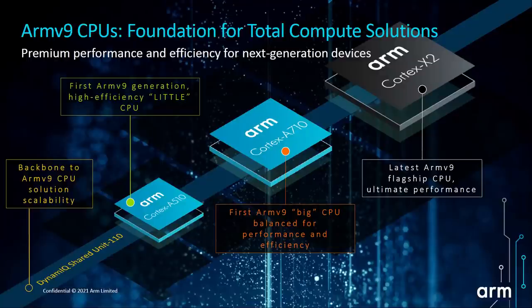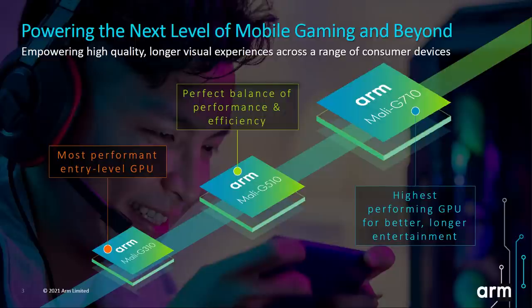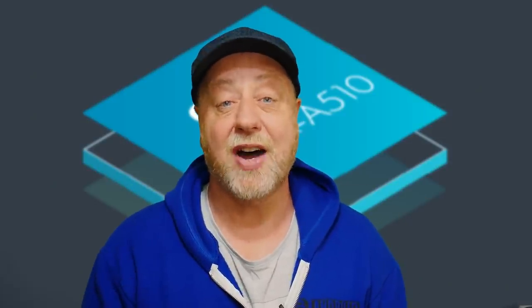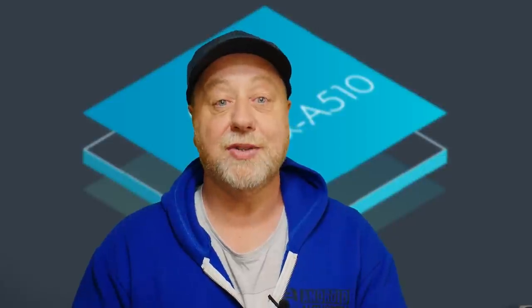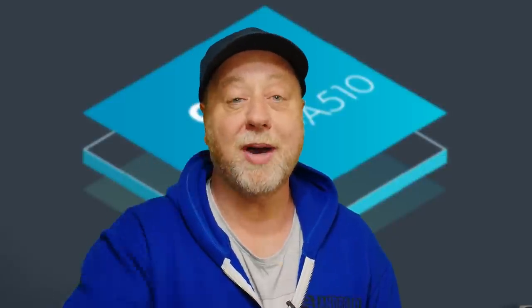ARM has announced three new CPU designs: the Cortex-X2, the Cortex-A710, and the Cortex-A510. There are also new GPUs — the Mali-G710, the Mali-G510, and the Mali-G310. This video is about the Cortex-A510. There are other videos I'm also publishing on my channel to cover all that other stuff.